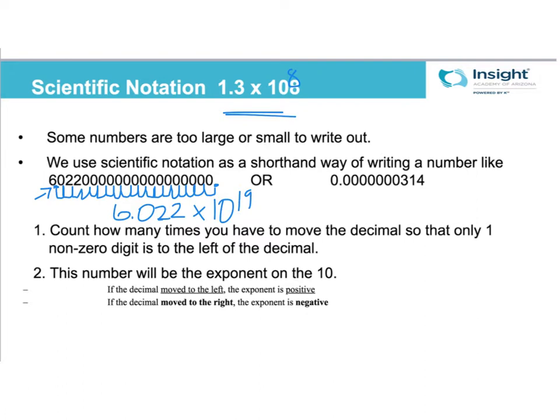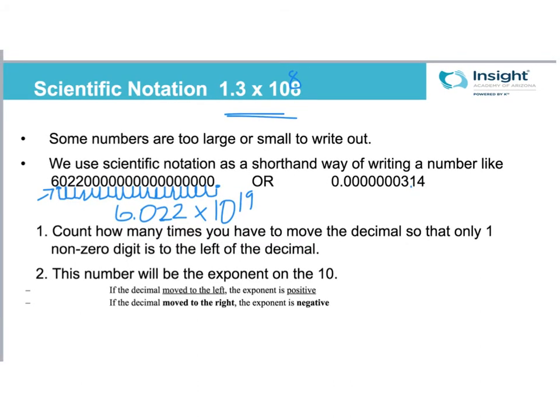If you move your decimal to the right, your number was less than 1, then it's a negative number. So like this next one would have a negative number. So we're going to move the decimal here so that it's 3.14, just one non-zero in front of the decimal. So 1, 2, 3, 4, 5, 6, 7, 8. So this would be 3.14 times 10 to the negative 8.